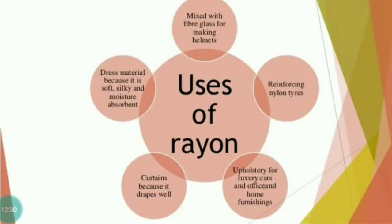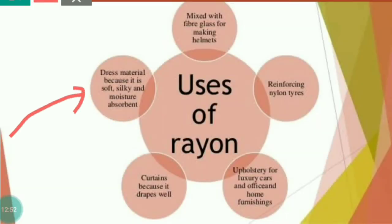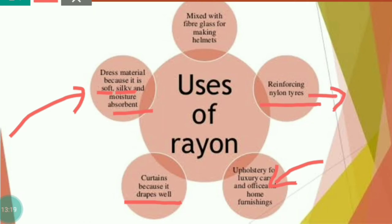If we talk about the uses of rayon, it has a wide variety of uses. It is used to make curtains because it drapes well, and dress materials because it is soft, silky, and moisture absorbent. It is also used to make upholstery for luxury cars and home furnishing, in the manufacturing of nylon tires as a constituent, and is mixed with fiber glass for making helmets. It is even used to make bandages, surgical dressings, and so on. The uses are endless.